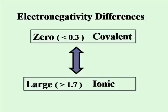If it is large, greater than 1.7 to 4, then we usually say they transfer their electrons for an ionic bond.